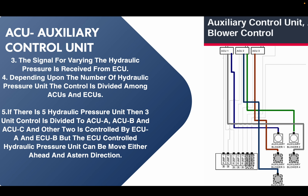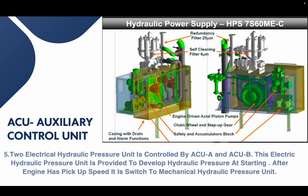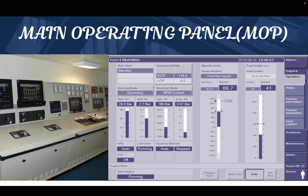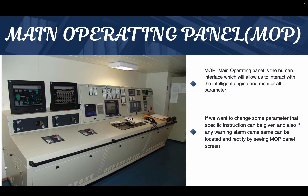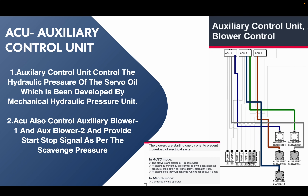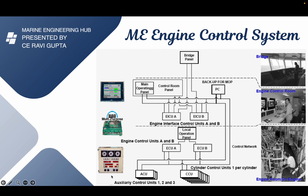In today's video we will see what is the purpose of ACU and how the ACU is controlling the auxiliary blower and the hydraulic loop system of the ME engine. After that we will see about the MOP — main operating panel — what is the purpose of the main operating panel and how it looks. So this is part 3 of the ME engine series, and today we will learn about two things: the MOP and the ACU.